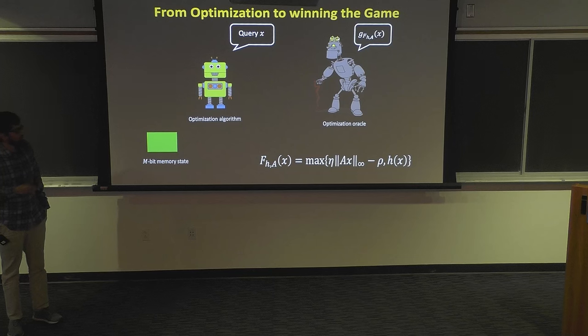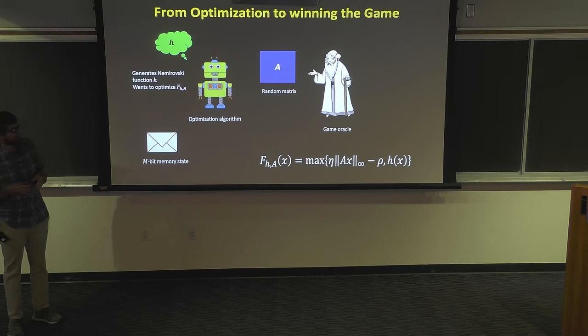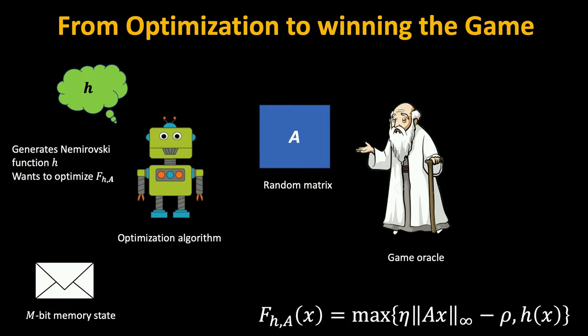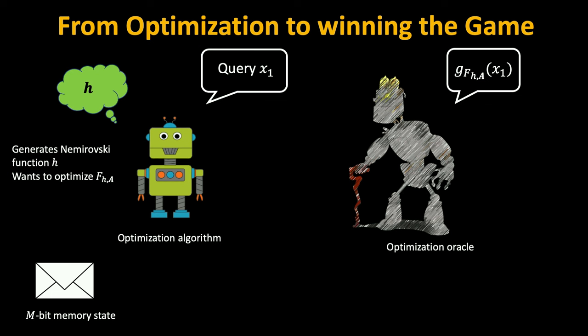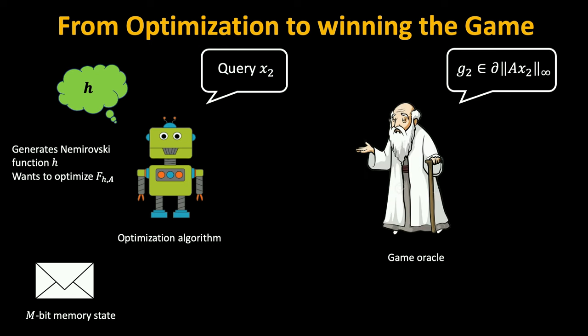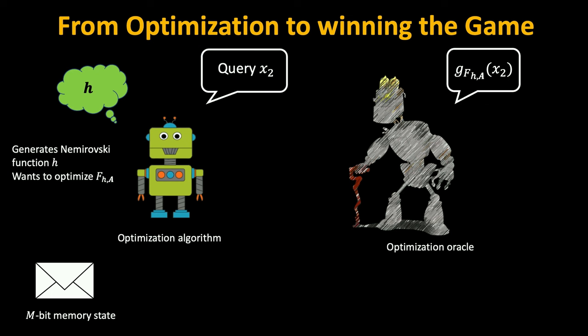What we show is that we can simulate the optimization oracle using the game oracle. The matrix A in the game corresponds to the matrix A in our hard function class. The Nemirovsky function is something the algorithm thinks of on its own. Whenever the algorithm makes a query, we have access to the oracle in the game which responds with the sub-gradient, and using this oracle we can simulate a first-order oracle for the function we are trying to minimize.